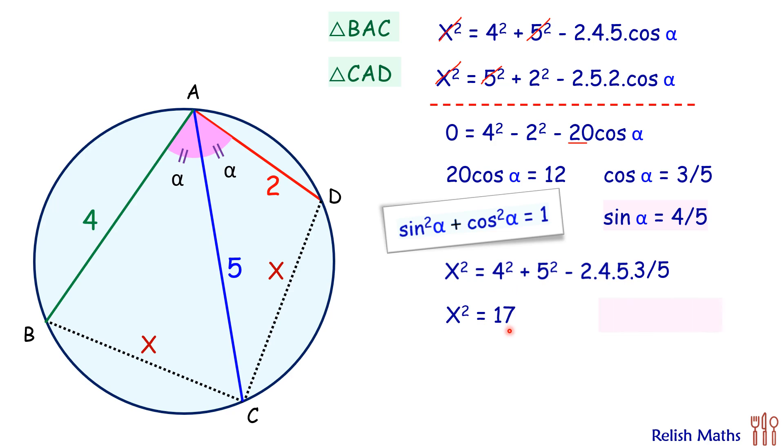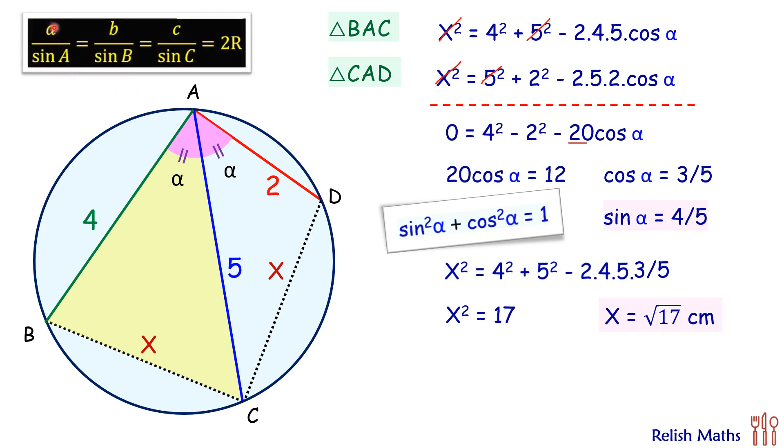Now to find the radius of the circle, let's take the triangle ABC and here we'll use sine law. So sine law is a/sin A = b/sin B = c/sin C, all equals to 2 times the circumradius. So here this circumradius is what we have to find.